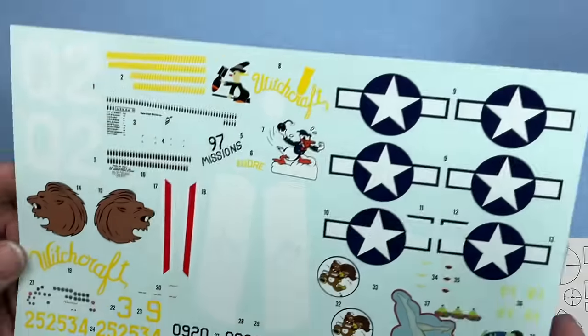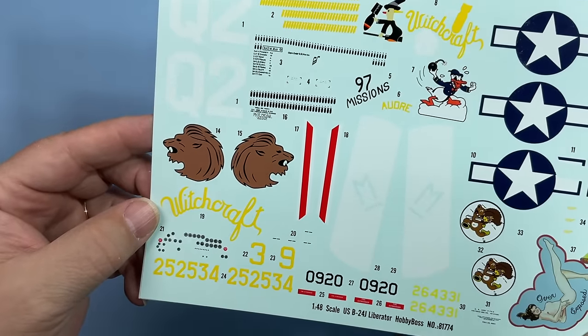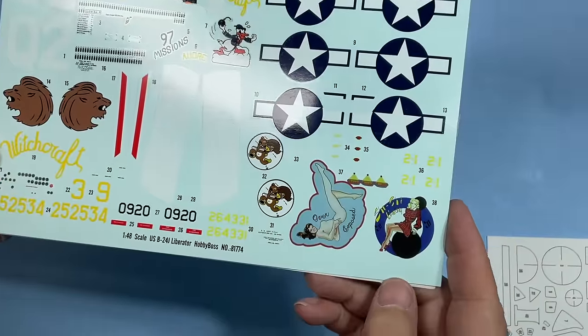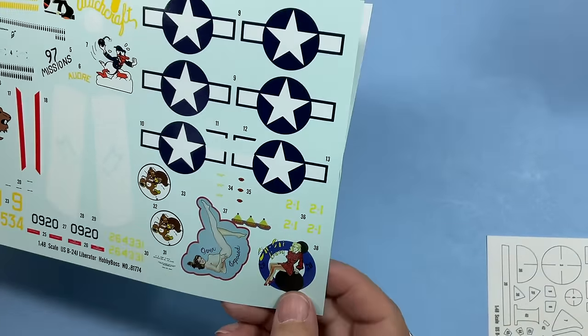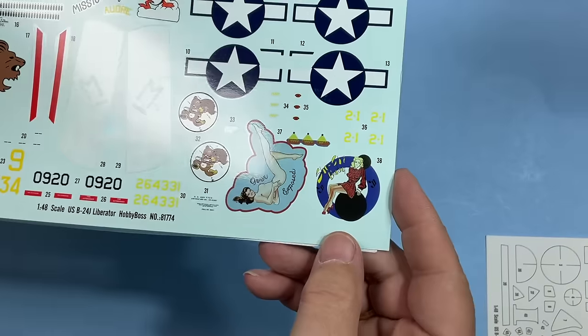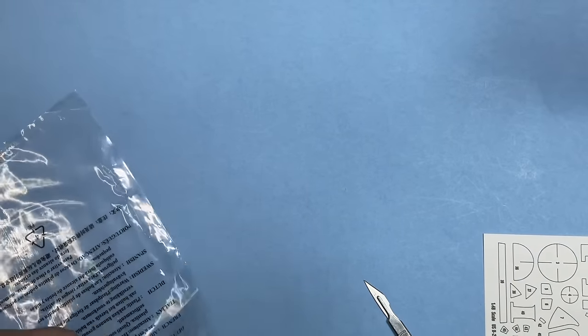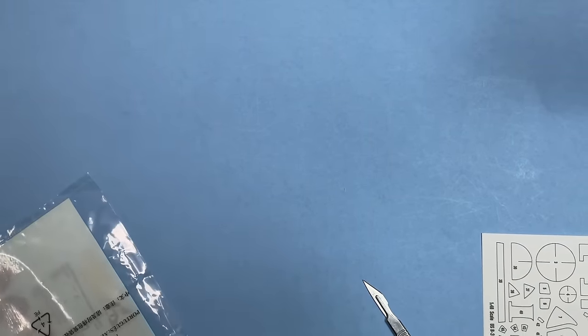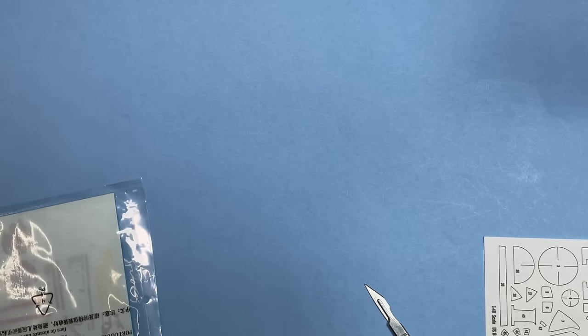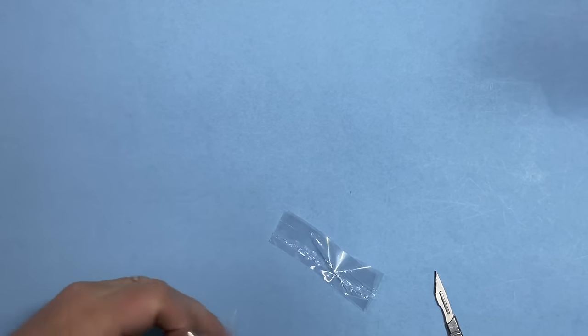Decals. Nice looking - there's your instrument panel decals, your call outs, your bomb markings. Let's see, Witchcraft, Susie Baby, Shebaby, I don't know. But you know there are a bunch of 1/48 scale decals available because the Monogram has been out so long. So put that in there.